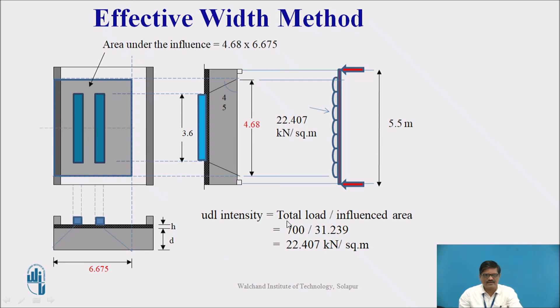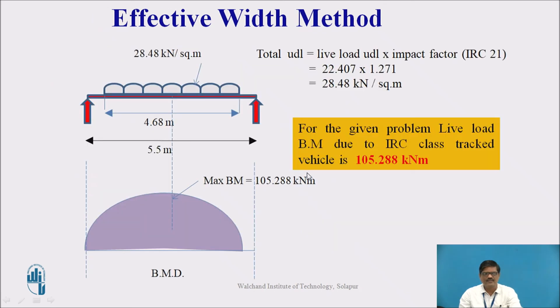Therefore, the UDL intensity we can find as total load divided by influenced area. Total load is 700 and the influenced area is 6.657 into 4.68, which comes out to be 31.239. This UDL intensity works out to be 22.407 kN per meter square. This UDL is present over a length of 4.68. This is a loading diagram. The total span is 5.5 meter, but the load is present centrally on only 4.68 meter. On this 4.68 meter, the load is present of magnitude 22.407.